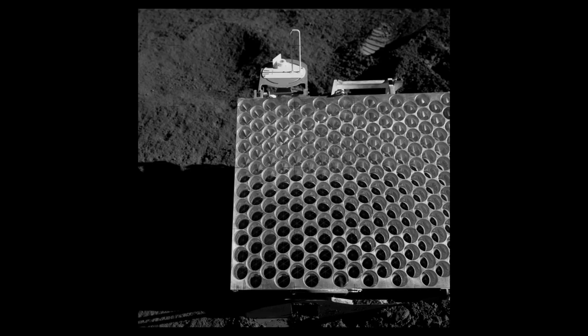NASA left arrays of retroreflecting prisms on the moon, and these have been used to measure the distance between the Earth and the moon using lasers, but it takes a large telescope to receive back even a few photons from one of these arrays.